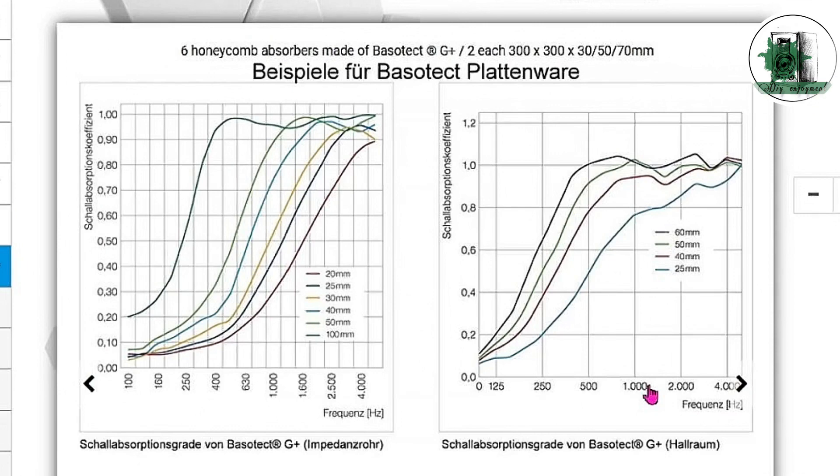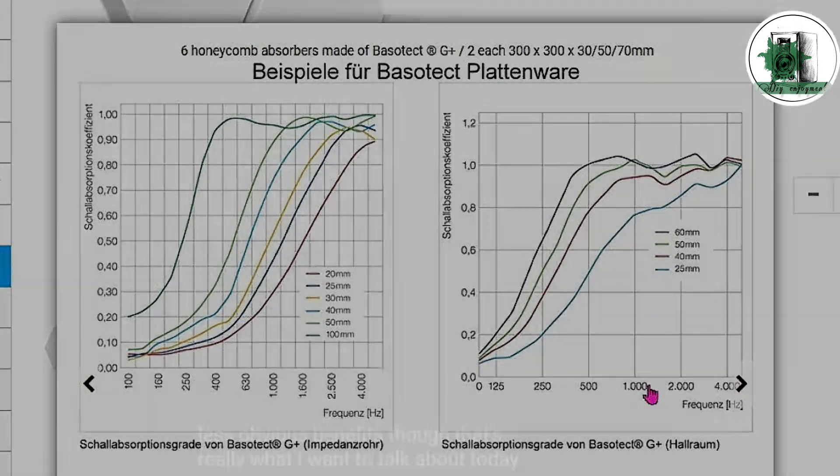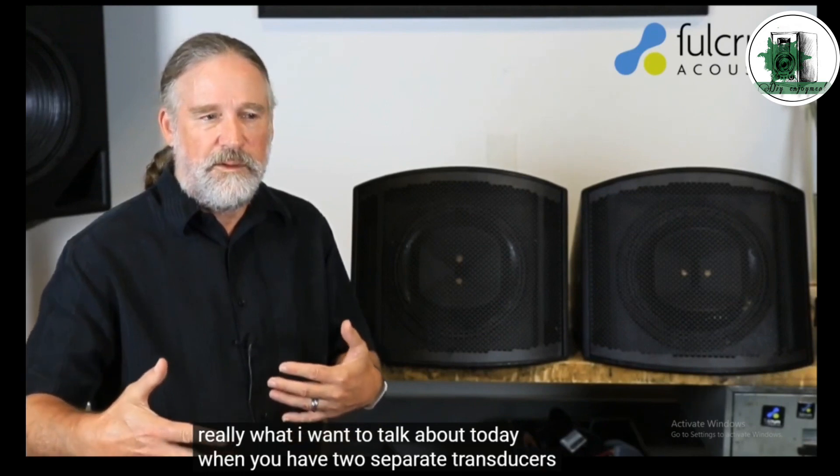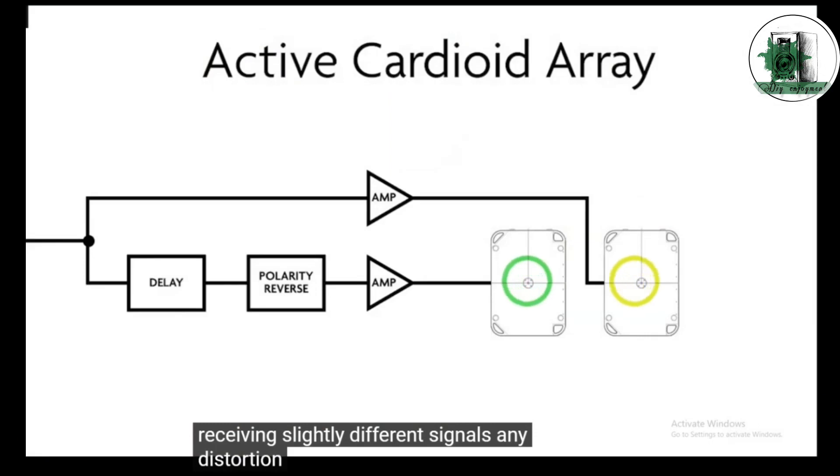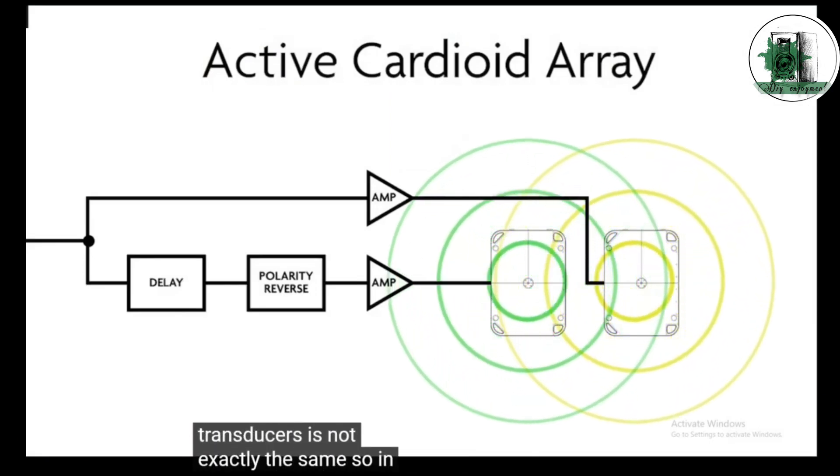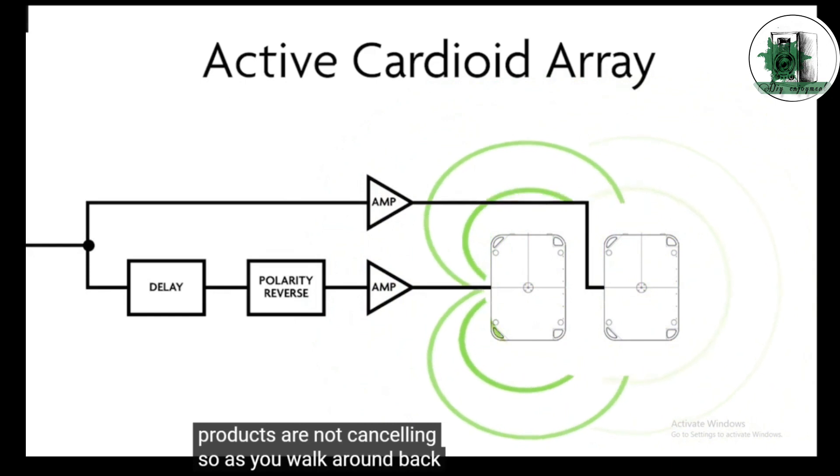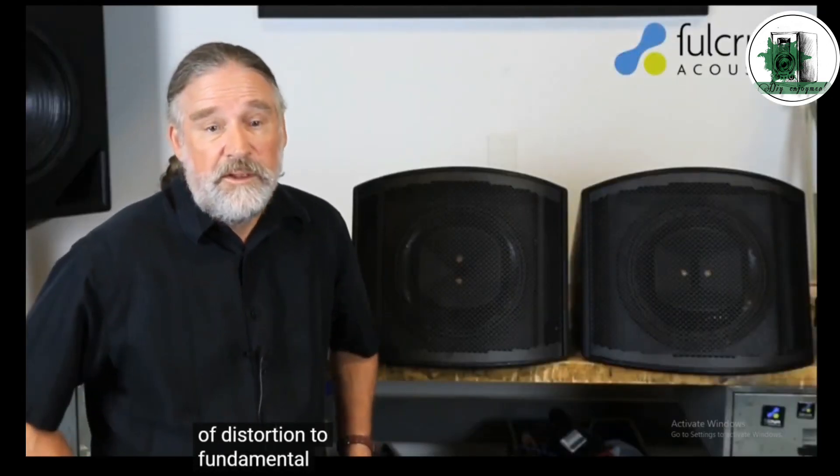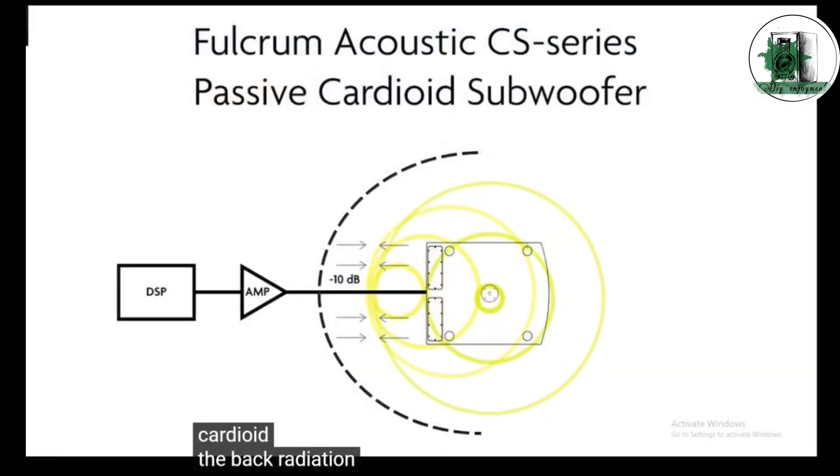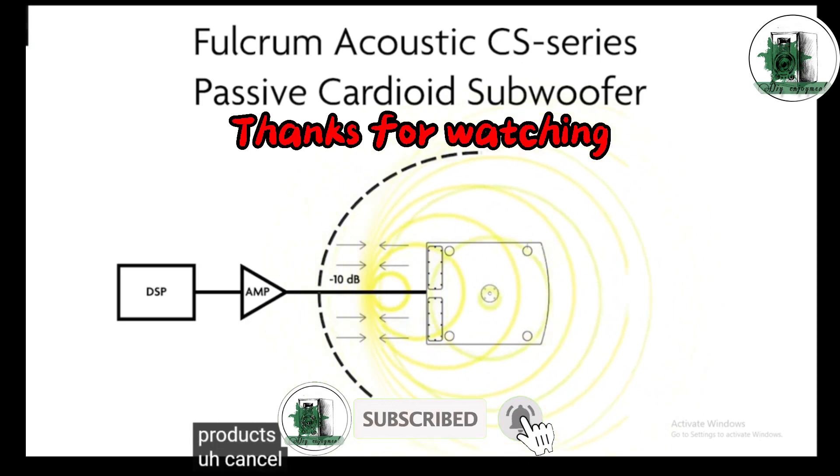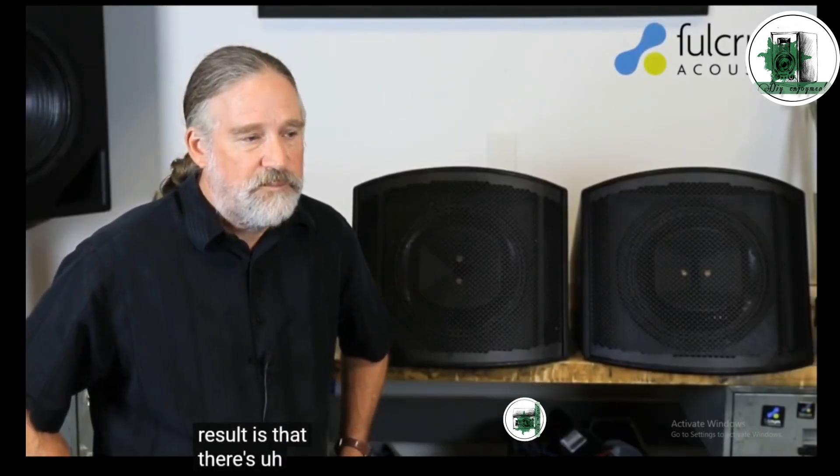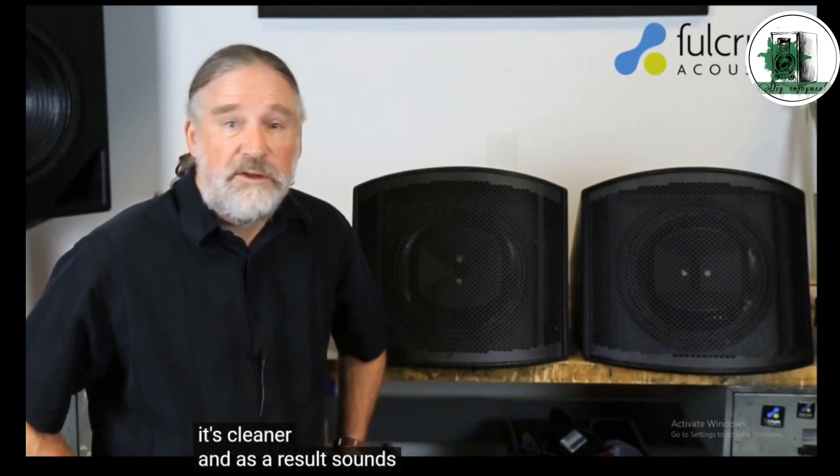One major advantage of using the acoustic delay method is its lower distortion compared to a dual active driver setup. With two active drivers, distortions add up, whereas removing the rear driver helps reduce this issue. When you have two separate transducers receiving slightly different signals, any distortion products from those transducers is not exactly the same. So in the back where the fundamental is being canceled, the distortion products are not canceling. So as you walk around back, the ratio of distortion to fundamental is much higher. In a passive cardioid, the back radiation and front radiation are both produced by the same cone motion, so they're identical. Even the distortion products cancel in the back. So the net result is that there's less distortion in the back. It's cleaner. And as a result, it sounds like there's more attenuation.